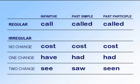The second family I call one-change verbs. You have the infinitive, then it changes to the past simple, and the past participle is the same as the past simple. This is also the case for regular verbs. Listen and repeat: have, had, had.